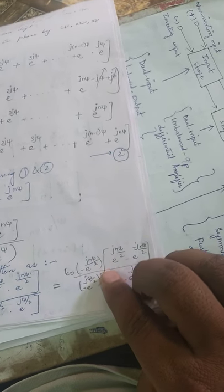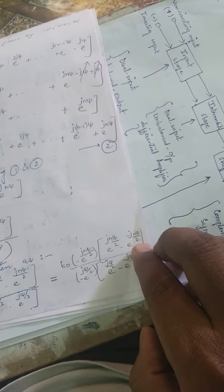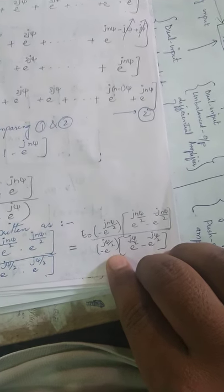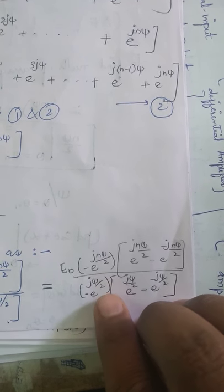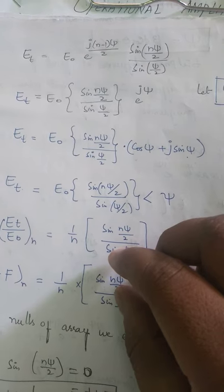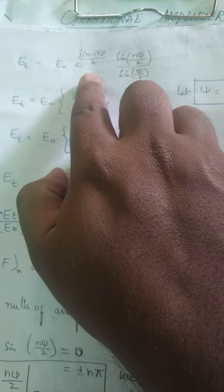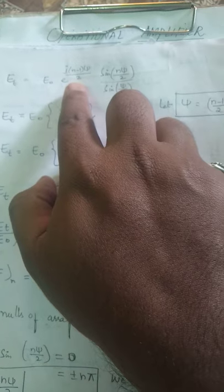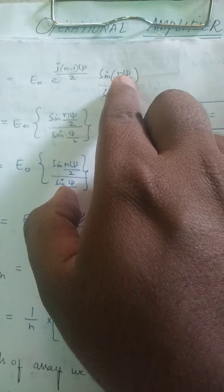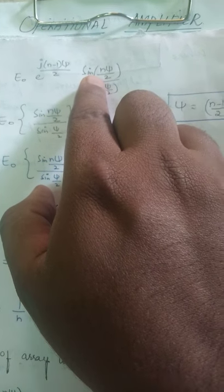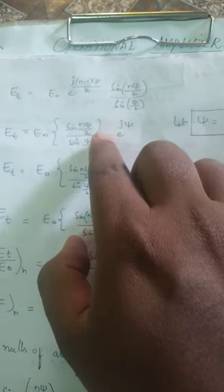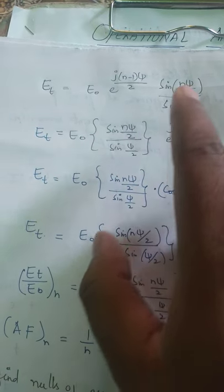After multiplying and dividing, what is left over: taking minus jN·chi/2 as common gives (e^(jN·chi/2) minus e^(minus jN·chi/2)) divided by 2. In the denominator also, taking the minus term, we get e^(minus j·chi/2) common. After simplifying, we can write E0 with e^(jN·chi/2) outside, and the remaining numerator can be written in terms of sine by multiplying and dividing by 2j.